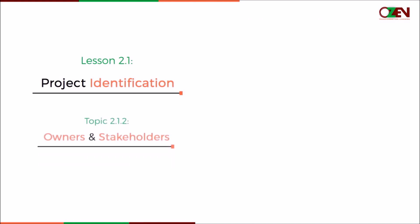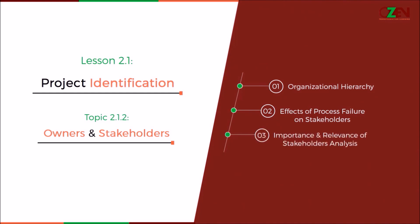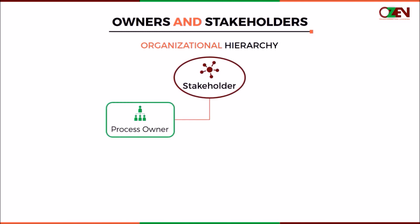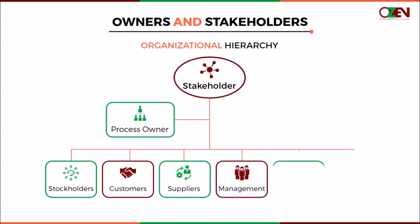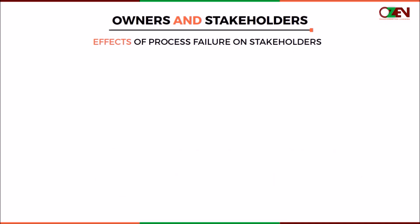In this topic, Owners and Stakeholders, you will learn about organizational hierarchy, effects of process failure on stakeholders, and the importance and relevance of stakeholder analysis. The organizational hierarchy includes stakeholders, process owners, stockholders, customers, suppliers, management, employees, and society. The stakeholders are people who are affected by the organization's actions. The process owner is responsible for the performance and execution of the process. The stockholders are the people who invest in the organization. The processes involved in a project must be discussed with the stakeholders before commencing work.